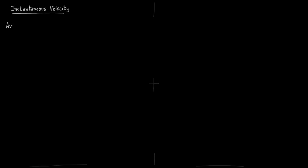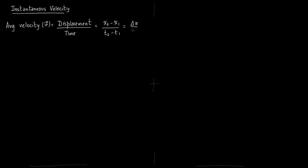We will now talk about instantaneous velocity. Let us recall what is average velocity. Average velocity is displacement divided by time. Displacement is a vector, and we write it as displacement divided by change in time, delta t.